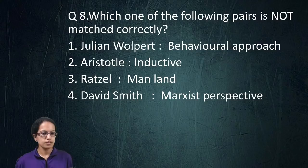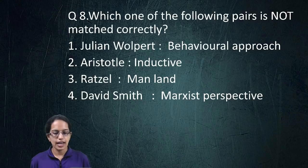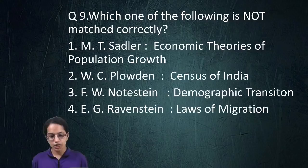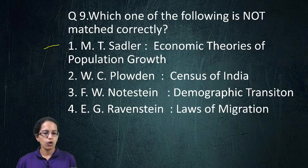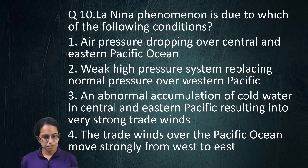The next question: all of the pairs are correctly matched. Aristotle talked about the inductive approach; Ratzel gave the man-land approach; Smith talked about the Marxist perspective; and Wolpert gave the behavioral approach. However, in another set, the first option is incorrectly matched because Sadler talked about the natural theory for population growth — he did not consider the economic theory. The rest of the options are correctly matched.